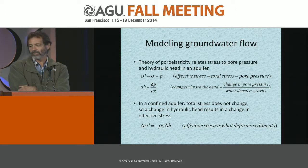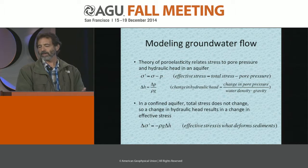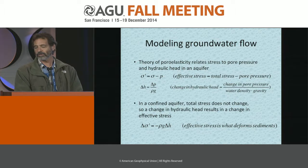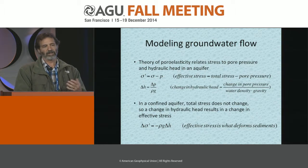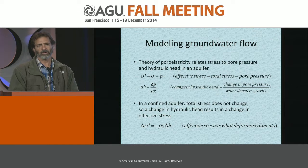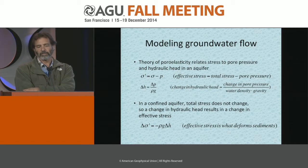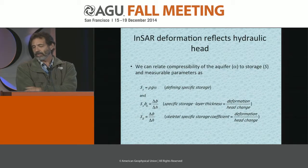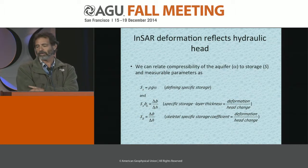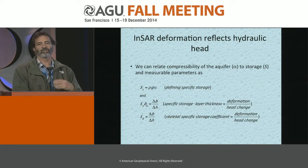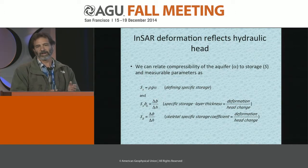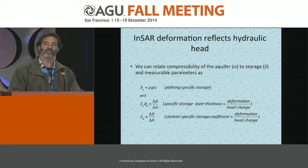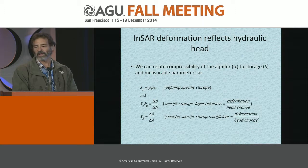We can use pore elasticity models to relate stress to pore pressure. Essentially, if you change the amount of water, you change the effective stress. When the effective stress gets high, it deforms the sediments, and so we get an indirect but pretty good measurement of how the hydraulic head — the level of the water in the system — is changing simply by measuring the deformation. Through some math, we get something called a storage coefficient, either per unit depth or integrated over the aquifer system, that tells us how much water you can store column-wise in a given part of an aquifer. If you know the area of the aquifer, you can figure out the amount of water going in and out of the system.